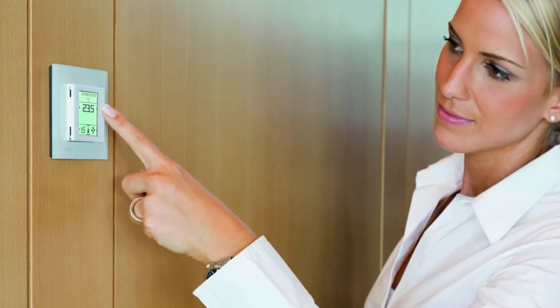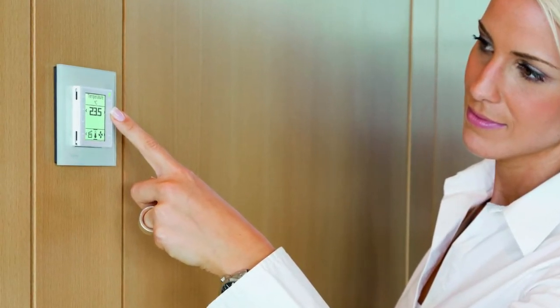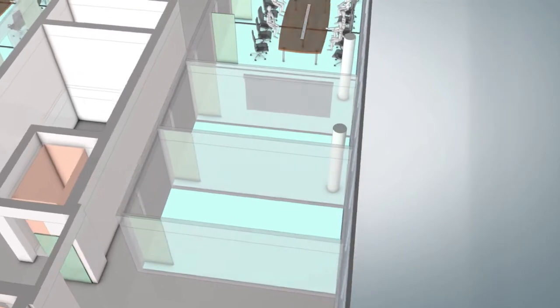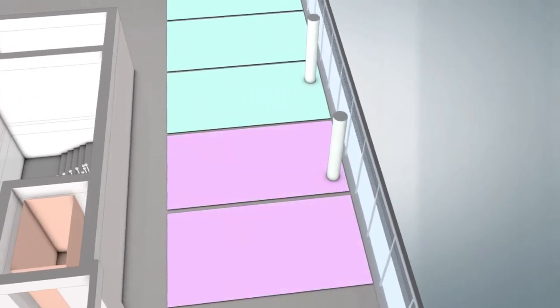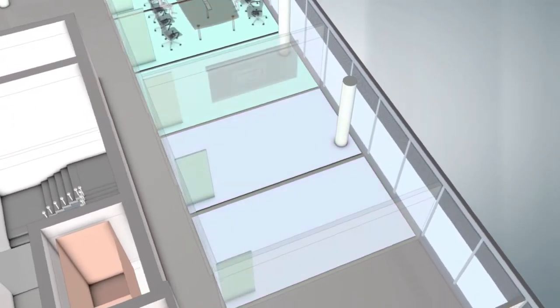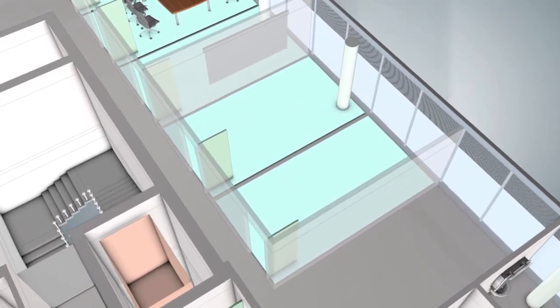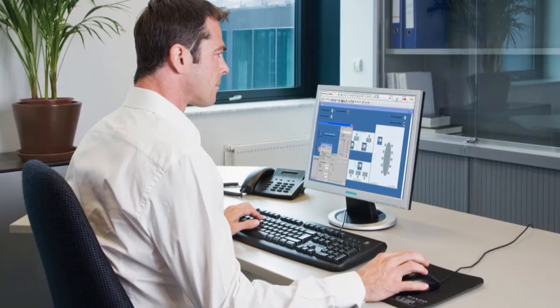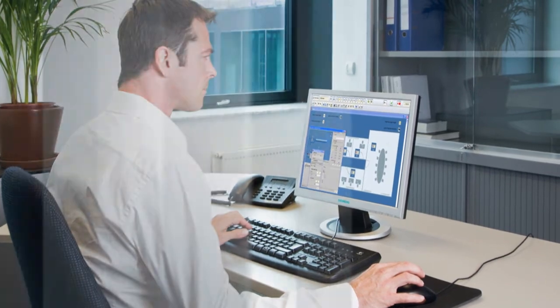With DeSigo Total Room Automation, such alterations or conversions are child's play. The various room segments are simply rearranged to create new rooms. Changes to installations or major software adaptations are not required. All that's needed is a few mouse clicks.